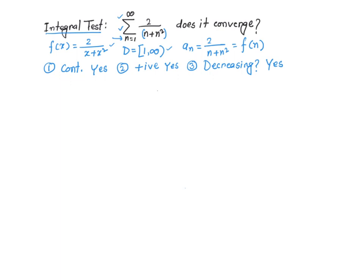Let's go ahead and find the integral of this function on the domain: from 1 to infinity of 2 over x plus x squared dx, which I can write as the limit as t approaches infinity of the integral from 1 to t of 2 over x times x plus 1 dx.